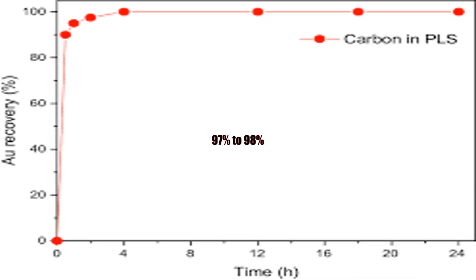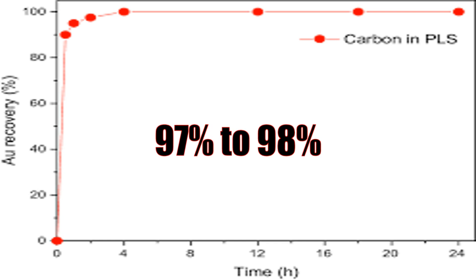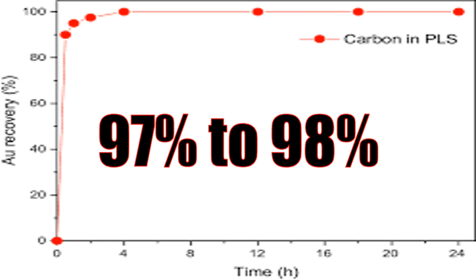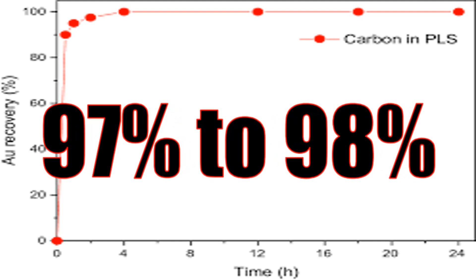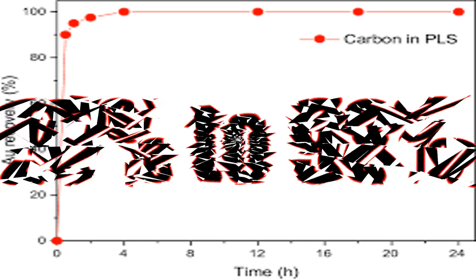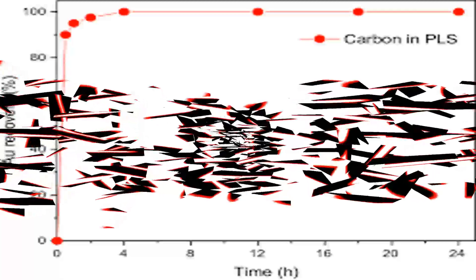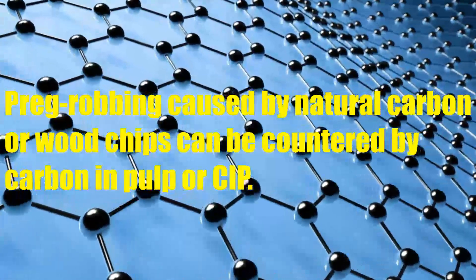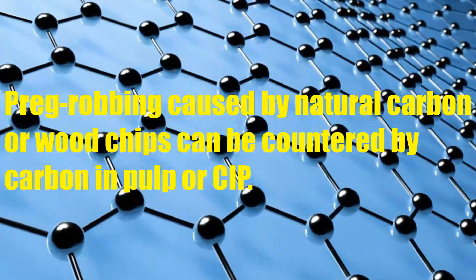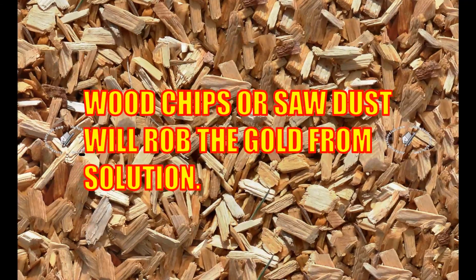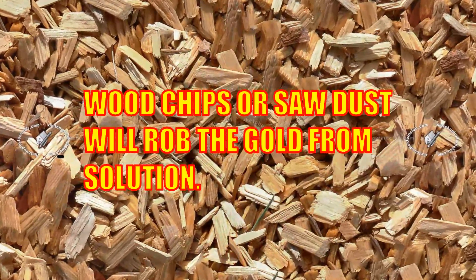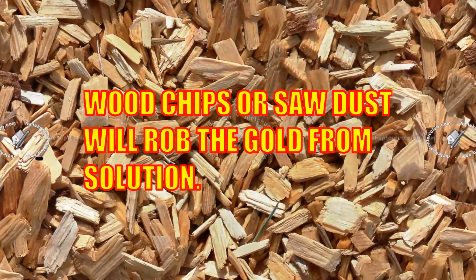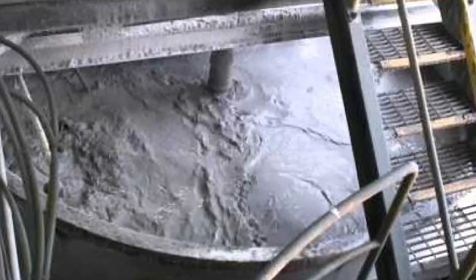The high adsorption rate and capacity of carbon permits gold recoveries as high as 98% in CIP. In carbon in leach (CIL), activated carbon is added directly to the vessels in which the cyanidation process is taking place. Adsorption with carbon can result in recoveries of 97 to 98% of the gold, compared to a 50% recovery rate with conventional cyanidation techniques. Naturally present carbon competes with the activated carbon for gold, so after oxygenation the cyanidation process is carried out simultaneously with activated carbon contact. The superior initial adsorption rate minimizes interference from preg robbers in the ore, resulting in improved leaching efficiency.